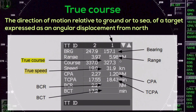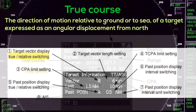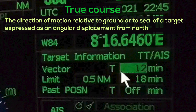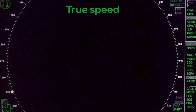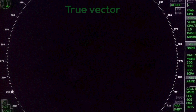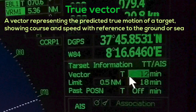True Course: The direction of motion relative to ground or to sea of a target, expressed as an angular displacement from north. True Speed: The speed of a target relative to ground or to sea. True Vector: A vector representing the predicted true motion of a target showing course and speed with reference to the ground or sea.